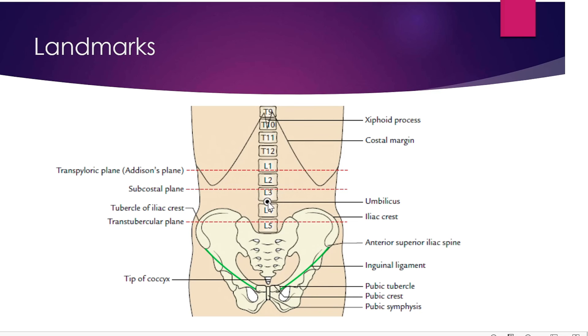The trans-umbilical plane is a transverse plane passing through the umbilicus (navel), lying between L3 and L4. The inter-tubercular plane, or trans-tubercular plane, passes through the tubercle of the iliac crest — that point 5 cm behind the anterior superior iliac spine — and corresponds to vertebral level L5. Knowing these planes — subcostal, trans-tubercular, trans-umbilical, and transpyloric — makes it easy to divide the abdomen into quadrants or regions.